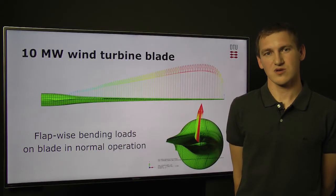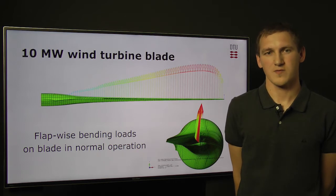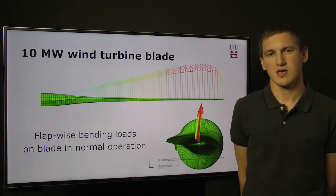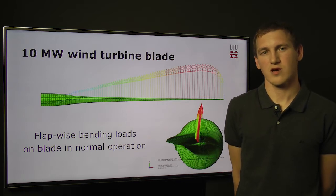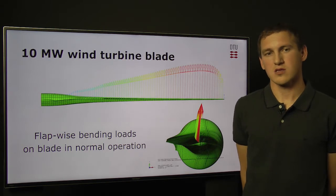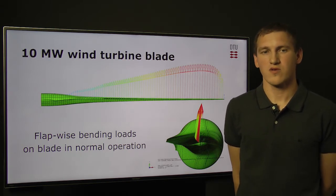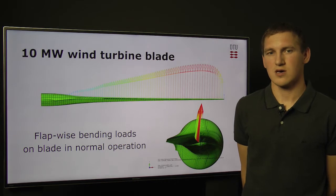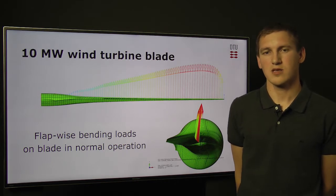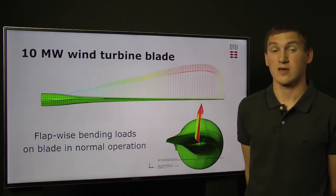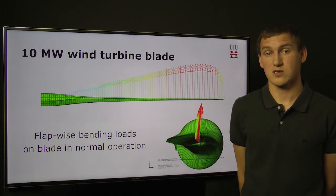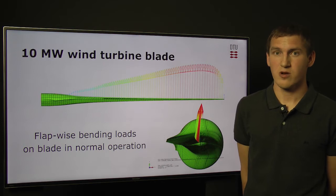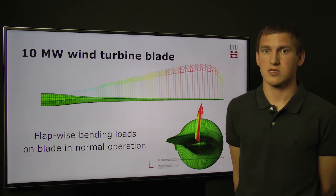Let's first look at what is a wind turbine blade. Here you can see a blade from a 10 MW reference wind turbine developed at Technical University of Denmark. This blade is pretty slim and 86 m long with 5 m root diameter, and the widest part of the blade is about 6 m wide. In many problems, this blade is considered as a beam with variable structural properties along its length.